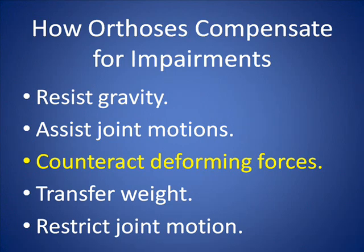Sometimes the pull of gravity is too strong for the muscles and ligaments to resist, and the bones are pulled or pushed out of their normal alignment. The agonists and antagonists around a joint can also have unbalanced muscle tone so that one muscle is constantly pulling harder, and the uneven force will cause the bone to change its normal shape. Orthoses can counteract the deforming force and prevent, or at least slow down, permanent changes in the shape of the bone.